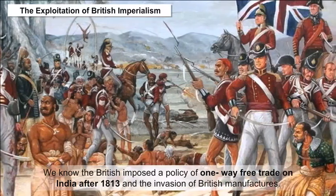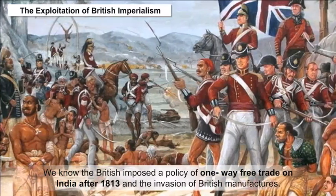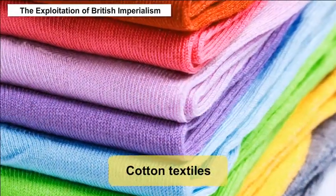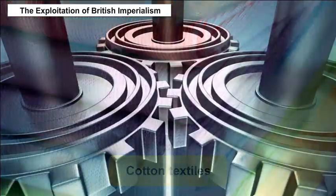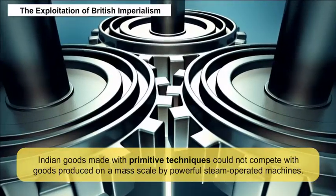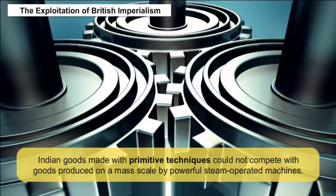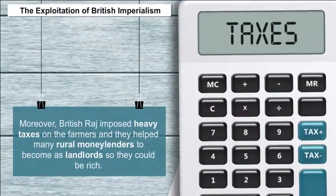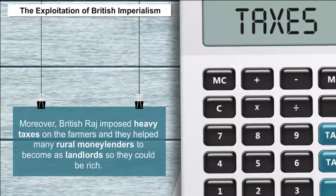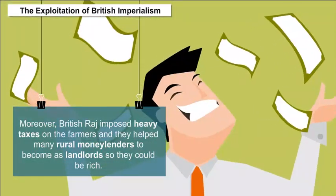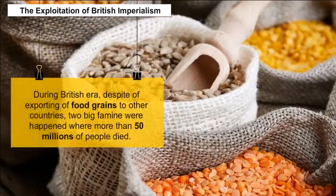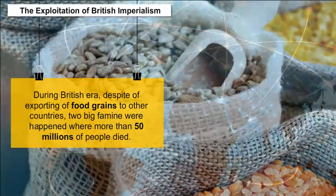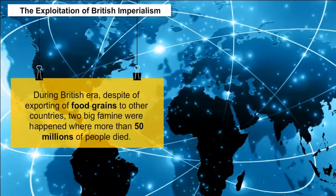The exploitation of British imperialism: the British imposed a policy of one-way free trade on India after 1813, and the invasion of British manufacturers — in particular cotton textiles — immediately followed. Indian goods made with primitive techniques could not compete with goods produced on a mass scale by powerful steam-operated machines. Moreover, the British Raj imposed heavy taxes on farmers and helped many rural moneylenders become landlords. During the British era, despite exporting food grains to other countries, two big famines occurred in which more than 50 million people died.